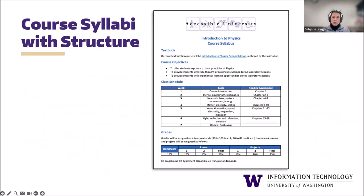I wanted to show you the exact same content, but now the information is organized visually. We have headings that are bolder and a different color. We have a bulleted list and a simple table that organizes the reading assignment by week and by topic. Now we can see that the required reading for week three are chapters four through seven. Nice job to those folks who were able to tease that information out from the previous example.